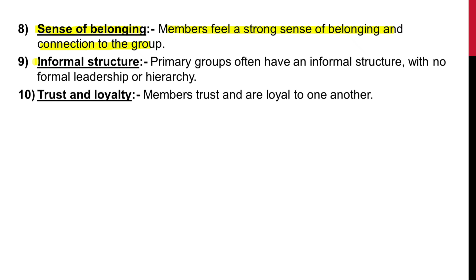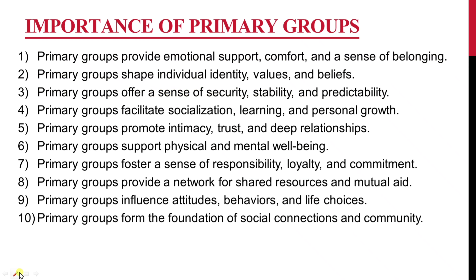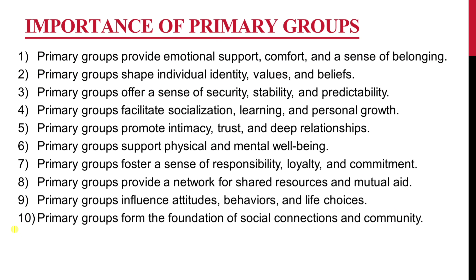Ninth is informal structure — primary groups often have an informal structure with no formal leadership or hierarchy. Tenth is trust and loyalty — members trust and are loyal to one another.